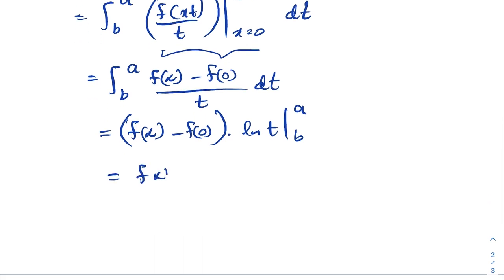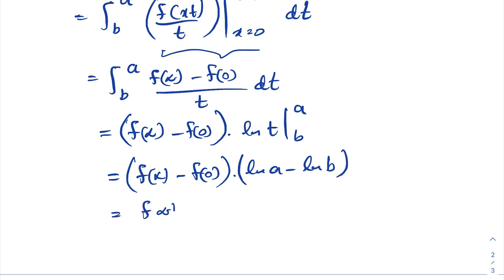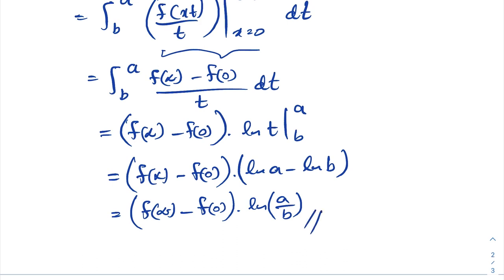Applying limits, we get the integral from b to a of [f(infinity) minus f(0)] over t dt. Since f(infinity) minus f(0) is constant, integrating 1/t gives ln(t), evaluated from b to a. This yields [f(infinity) minus f(0)] times [ln(a) minus ln(b)] equals [f(infinity) minus f(0)] times ln(a/b), where f is a function defined for all non-negative real numbers with a limit at infinity. If you like this type of video, please subscribe to this channel.